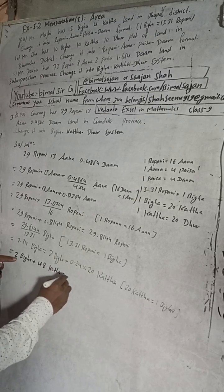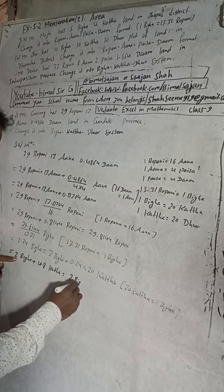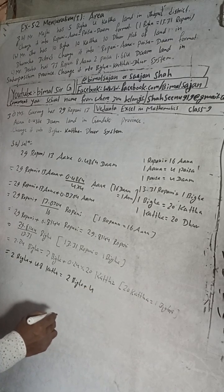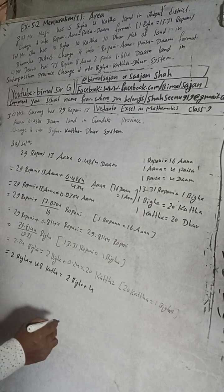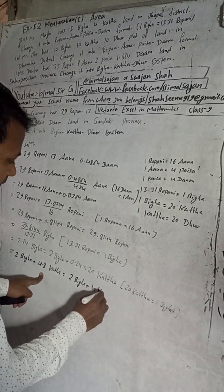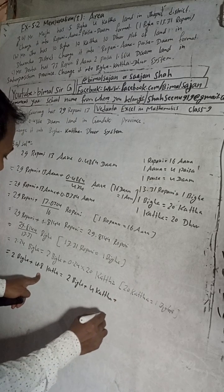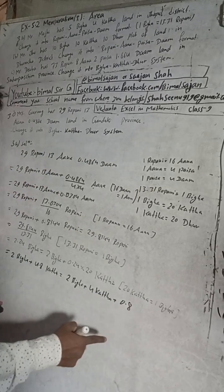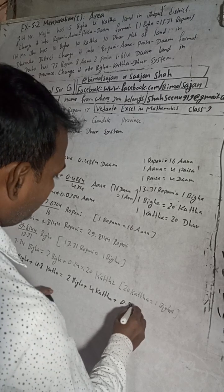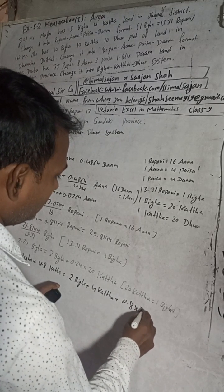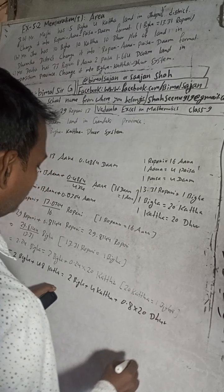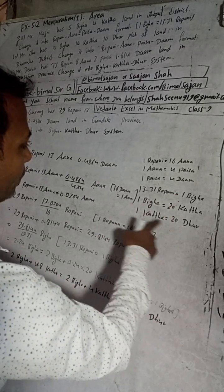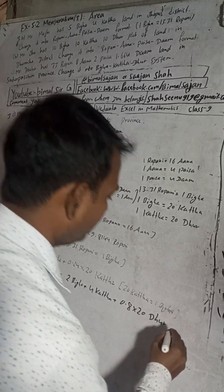2 bigaya plus 4 Katha plus 0.8 Katha. 0.8 Katha, this is your Katha. So when I multiply this into 20, this will be Dhur. The reason for this is 20 Dhur is called 1 Katha. 20 Dhur is called 1 Katha.